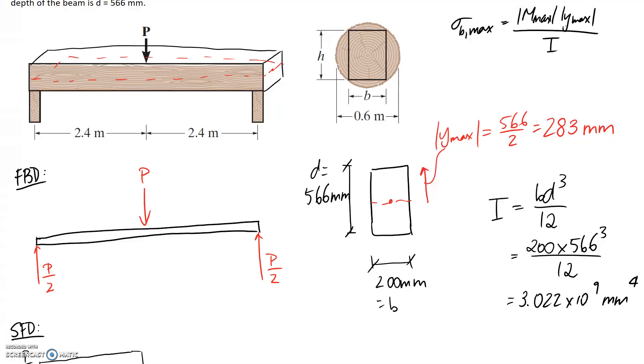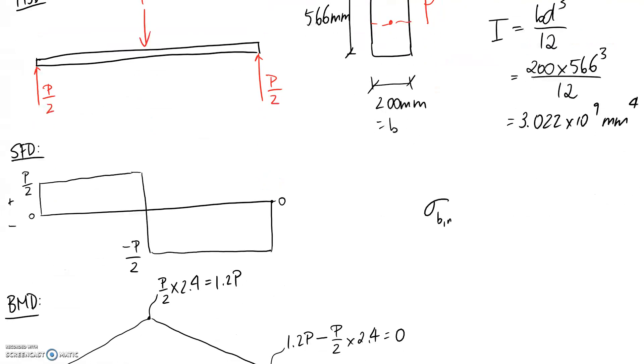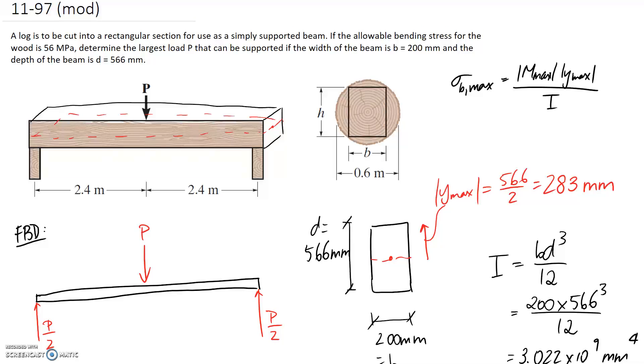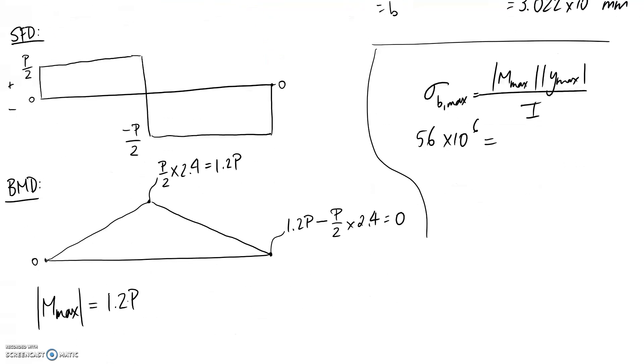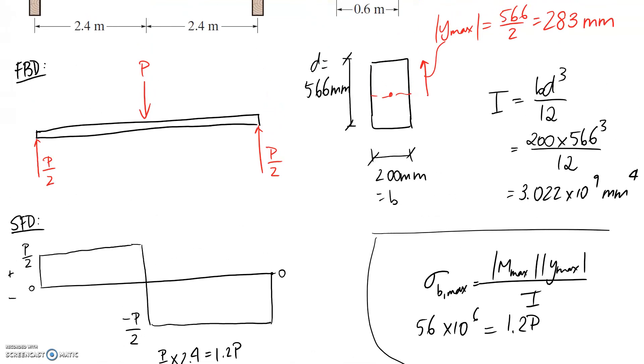We've now got everything that we need to be able to go ahead and use this equation. So substituting in, we know that the maximum moment that we're aiming for was given in the question - it was equivalent to 56 megapascals, sorry, maximum stress. So I'm going to sub this in base units, so it's going to be 56 by 10 to the power of 6. The maximum moment we have as 1.2P - remembering that P is the load that we're going to determine. Y max is we worked out to be 283 millimeters. Again, I'm going to sub it in in base units, so that becomes 0.283.